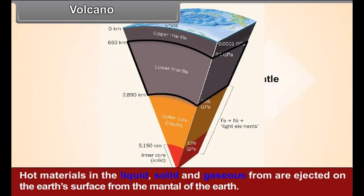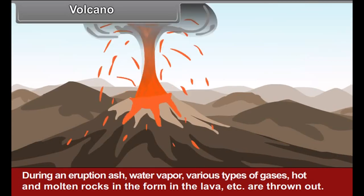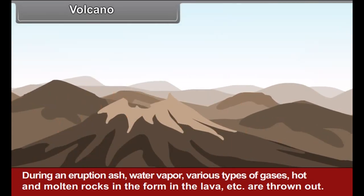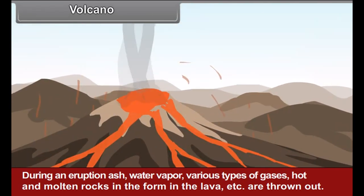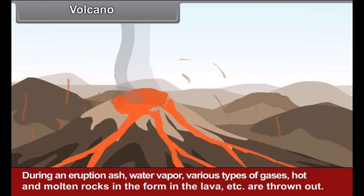Volcano. Hot materials in the liquid, solid and gaseous form are ejected on the earth's surface from the mantle of the earth. This process is called a volcanic eruption. During an eruption, ash, water vapor, various types of gases, hot and molten rocks in the form of lava, etc. are thrown out.